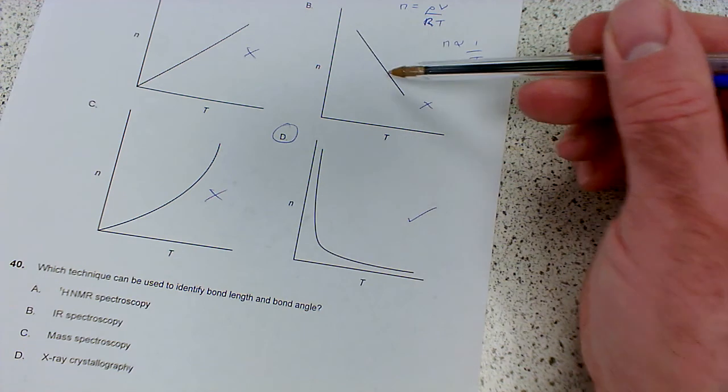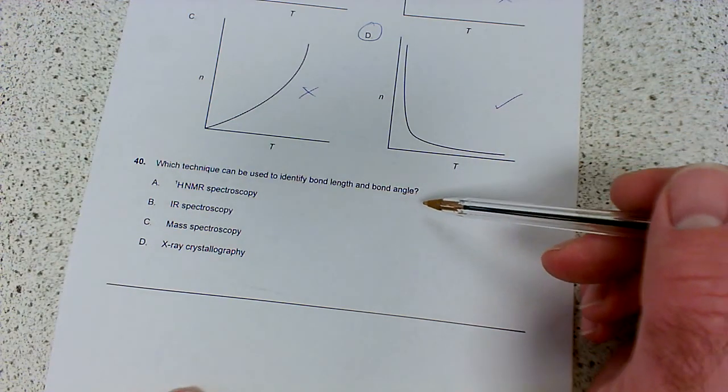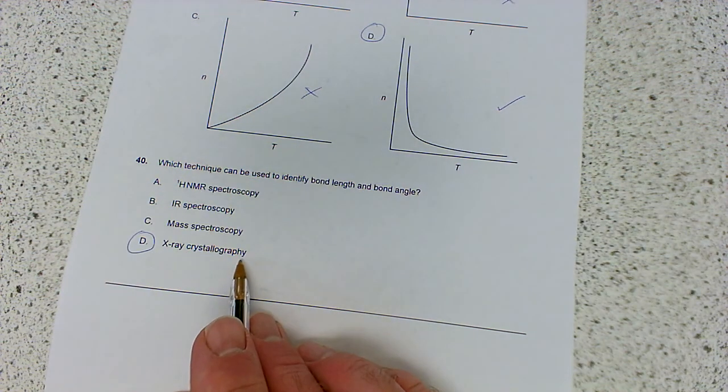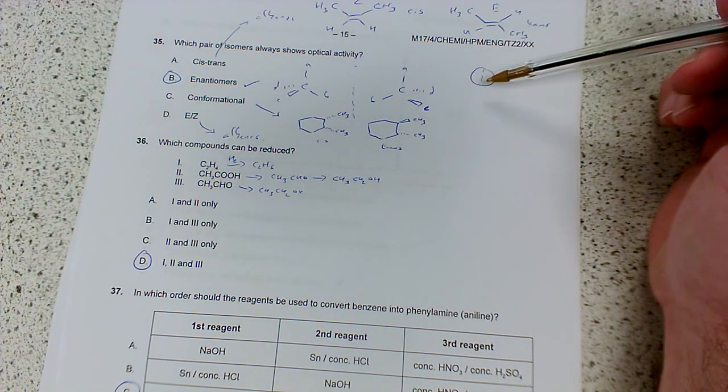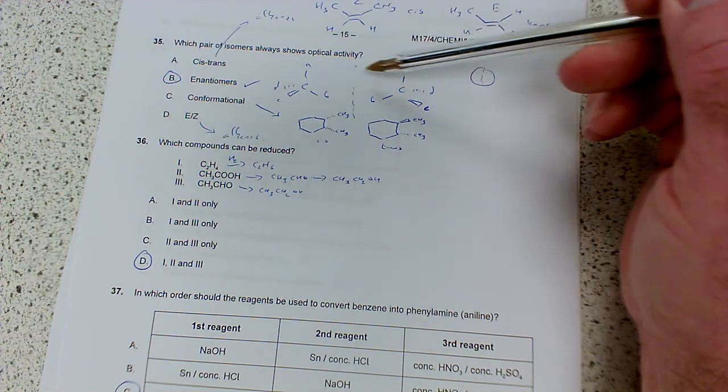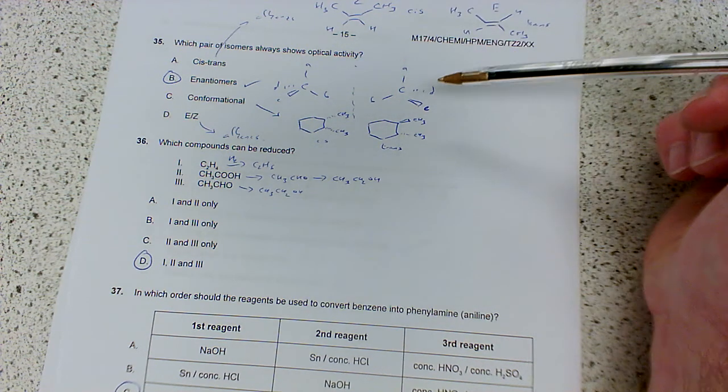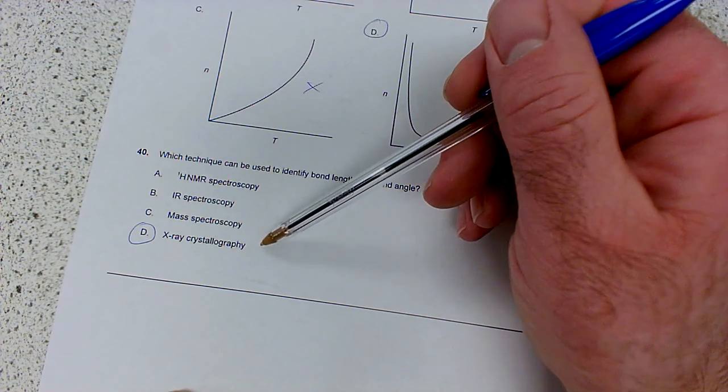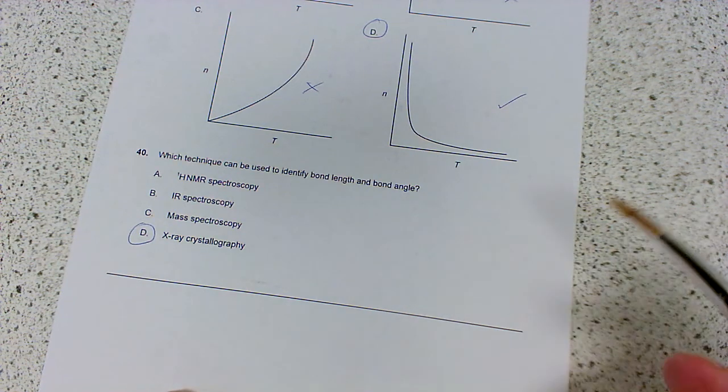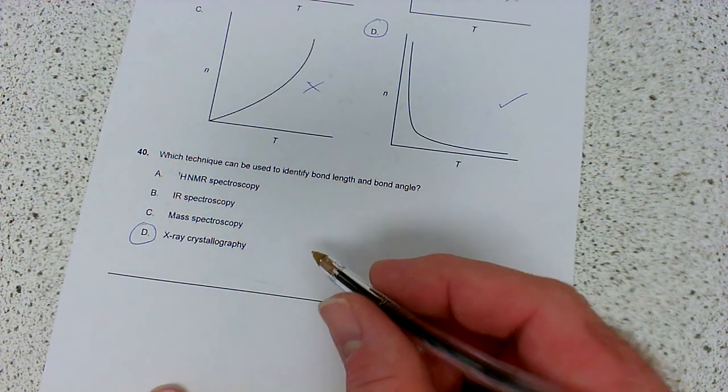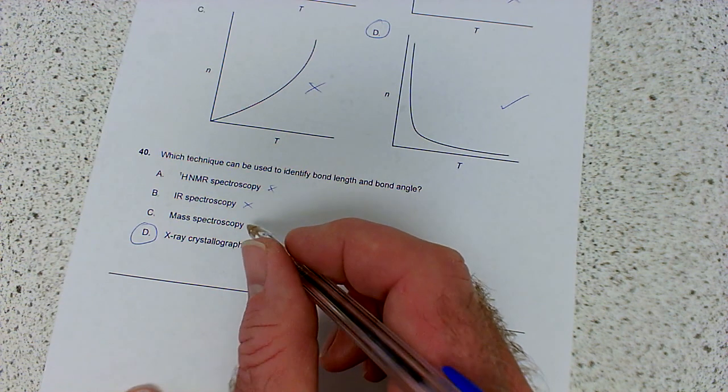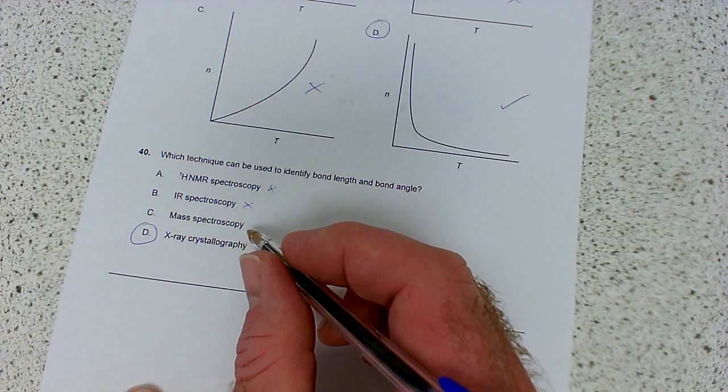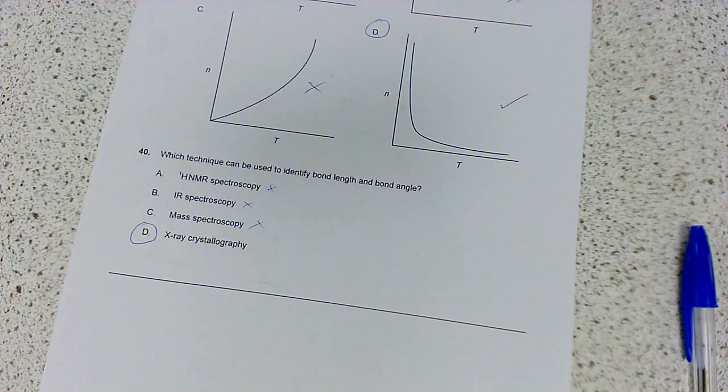Which technique can be used to identify bond length and bond angle? It's x-ray crystallography. It can also tell you which enantiomer you have. X-ray crystallography gives a three-dimensional representation of the molecule, so you can see bond lengths, bond angles, and chiral centers. Proton NMR tells you hydrogen environments, infrared tells you what bonds are present, mass spectroscopy gives the molecular ion peak and common fragments. The answer is A. And that's the paper done, bye folks.